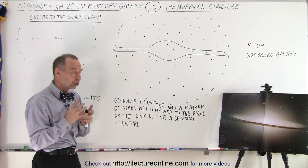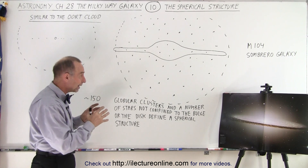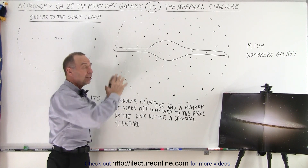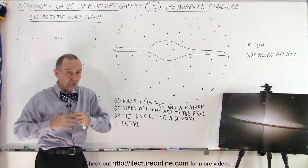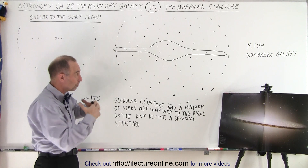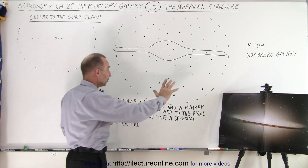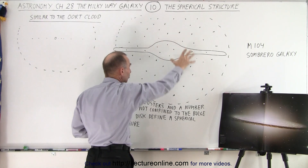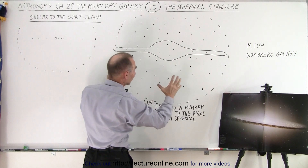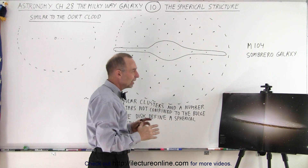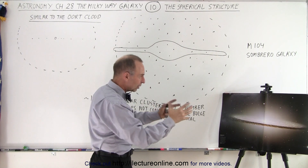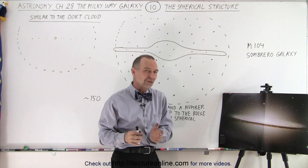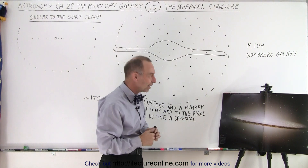We do know that these globular clusters, as well as a number of stars not contained within the bulge and the disk — there are indeed stars beyond it as well, not as dense, but also in the region outside — kind of form a spherical region. Let's take a look at this beautiful galaxy, which we should recognize as the Sombrero Galaxy.